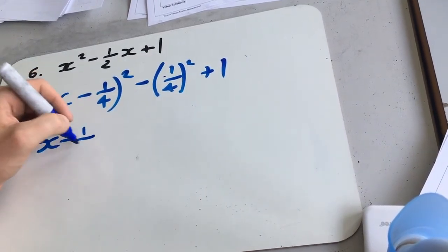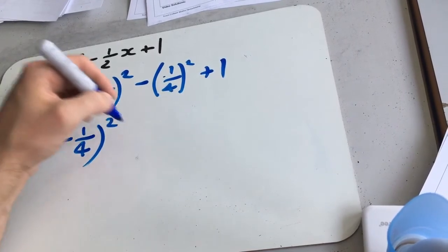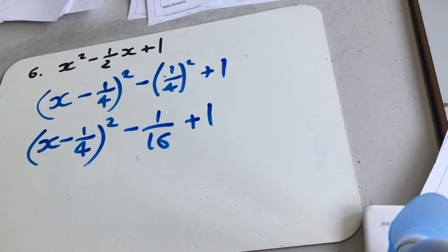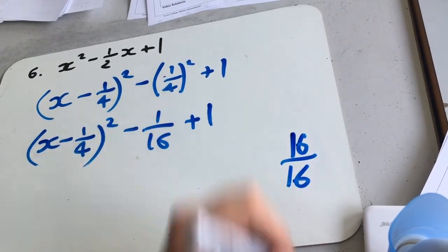So we get x minus 1 quarter squared minus a sixteenth plus 1. And again, same again, we can say 1 is 16 over 16.